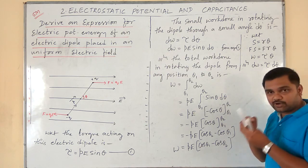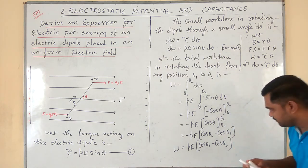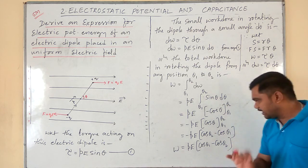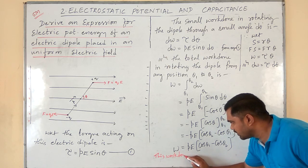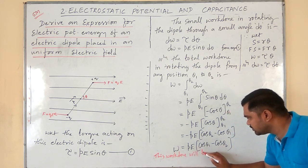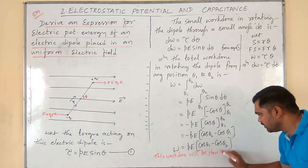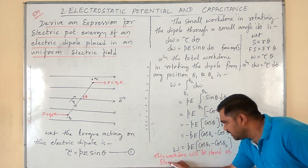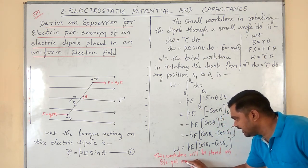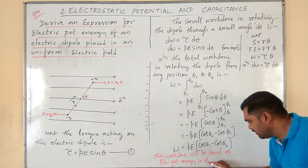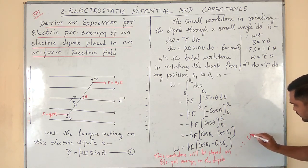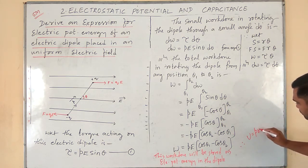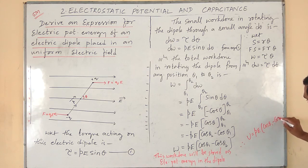According to the formality, this work done on the electric dipole will be stored as electrical potential energy in it. Therefore we write U = pE(cosθ₁ − cosθ₂). This is the expression for electric potential energy of an electric dipole placed in a uniform electric field.